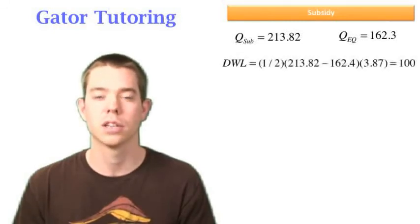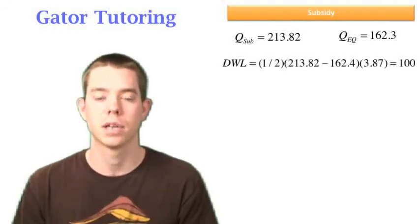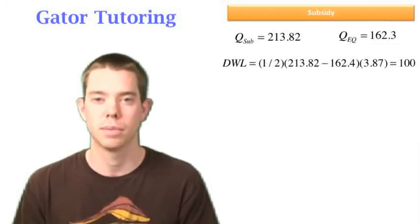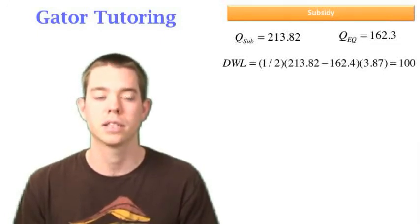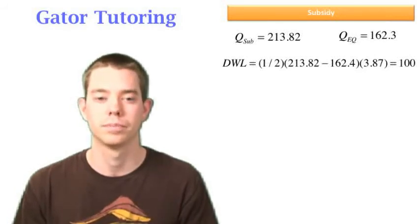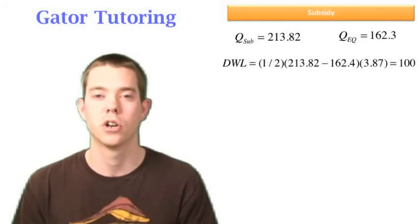So I can find my deadweight loss is just one half base times height where the height is 3.87 because it's equal to the amount of the subsidy and the base is 213.82 minus 162.4. And I find the deadweight loss in this case is 100.